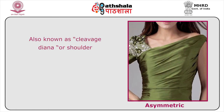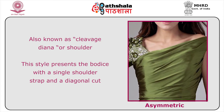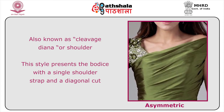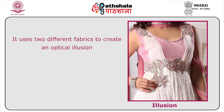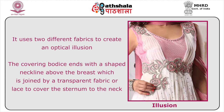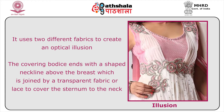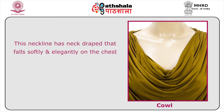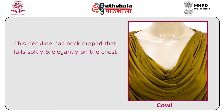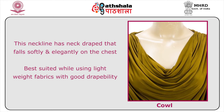The asymmetric neckline, also known as cleavage Diana or one-shoulder, presents the bodice with a single shoulder strap and a diagonal cut. The illusion neckline uses two different fabrics to create an optical illusion — the covering bodice ends with a shaped neckline above the breast, joined by a transparent fabric or lace to cover the sternum to the neck. The cowl neckline has a neck drape that falls softly and elegantly on the chest, best suited with lightweight fabrics that have good drapability.